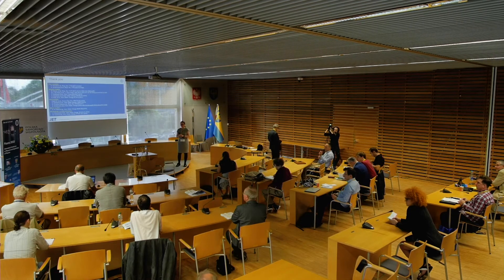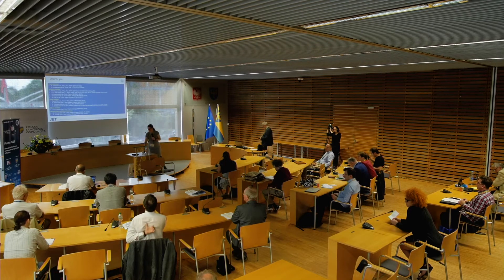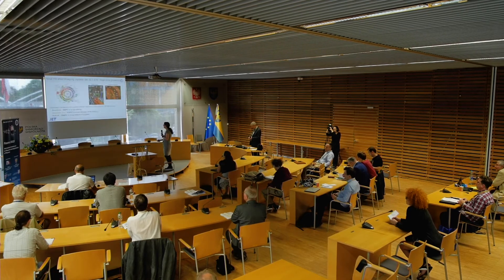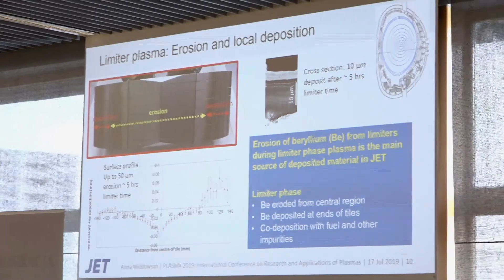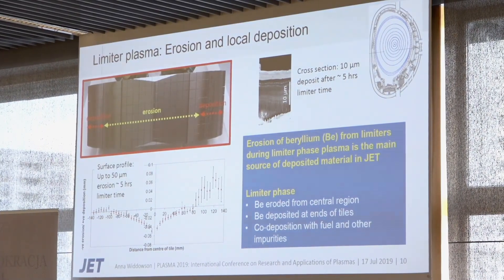A question about slide 10 showing the deposition and erosion profile on the inner side limiter: there is a clear difference between the electron drift side and the ion drift side deposition. Currently there is no resolved explanation for why such a difference appears, but it is something under consideration.